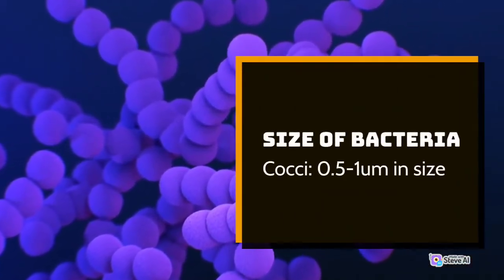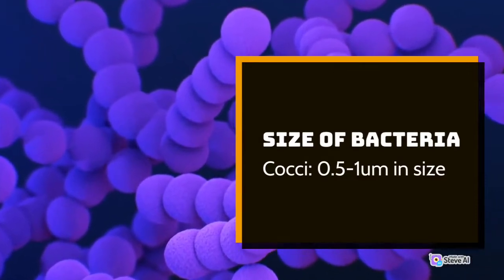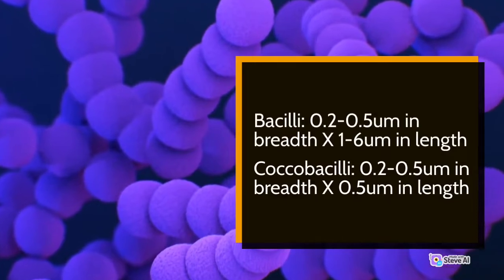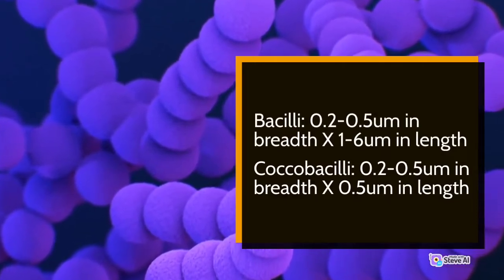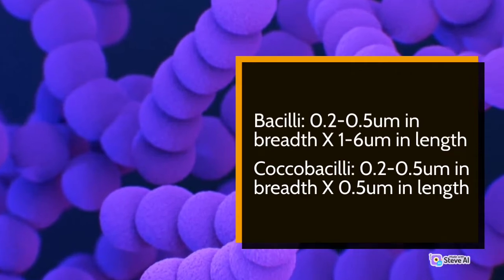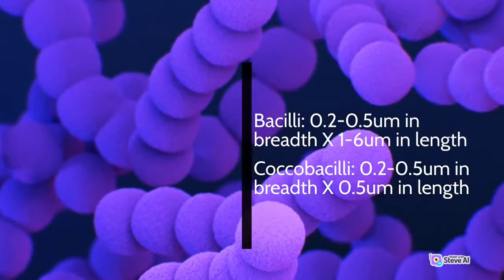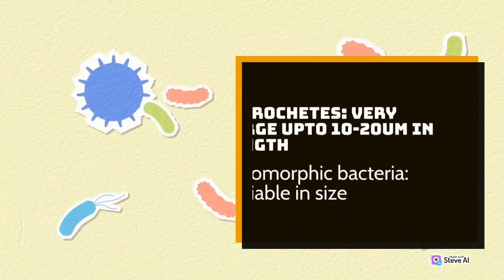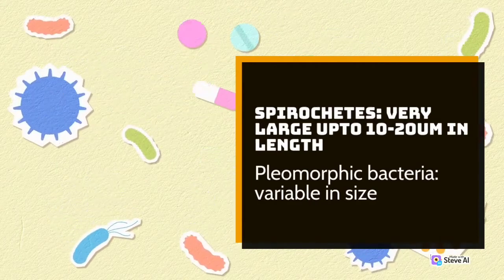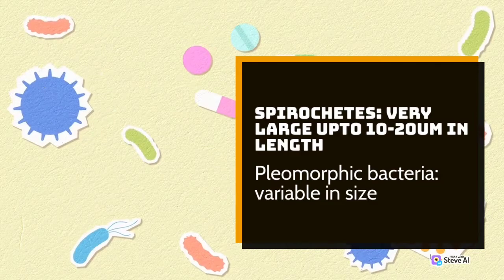Size of bacteria: Cocci — 0.5 to 1 micrometer in size. Bacilli — 0.2 to 0.5 micrometers in breadth × 1 to 6 micrometers in length. Coccobacilli — 0.2 to 0.5 micrometers in breadth × 0.5 micrometers in length. Spirochetes — very large, up to 10 to 20 micrometers in length. Pleomorphic bacteria — variable in size.